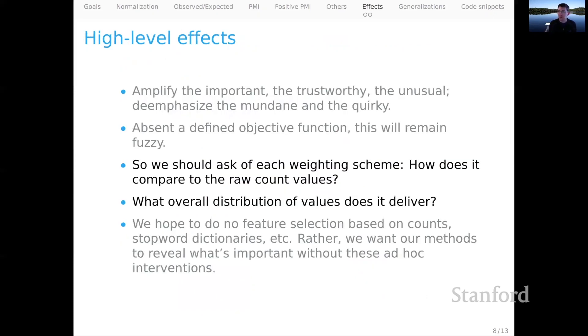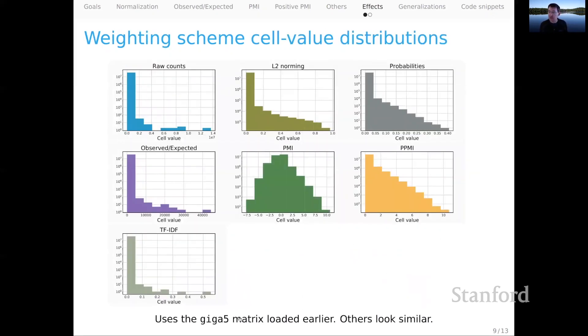Let's return to our central questions. Remember, for each one of these reweighting schemes we want to ask, how does it compare to the raw count values, and what overall distribution of values does it deliver? So let's do a bit of an assessment of that. I'm working with the Giga5 matrix that you can load as part of the course materials. That's GigaWord with a window of five and scaling of one over n. Up here in the left, I have the raw counts, and the cell value along the x-axis, and the number of things that have that value along the y-axis. And you can see that raw counts, it's a very difficult distribution. First of all, this goes all the way up to about 100 million, and starting from zero. Most things have quantities that are close to zero. Then you have this very long thin tail of things that are very high frequency. This kind of highly skewed distribution is difficult for many machine learning methods, both in terms of the skewed towards zero and very low values, and also in terms of the range of these x-axis values. So we would like to move away from it. That's one motivating reason.